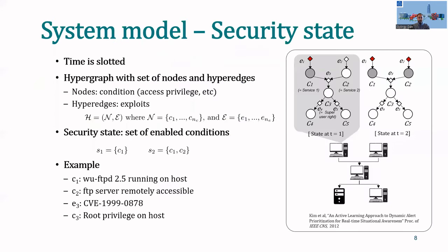To give you an idea of our model of the security state, we consider that time is slotted and we model the system's health in terms of security as a hypergraph that consists of a set of nodes and hyperedges. The nodes are conditions and the hyperedges are exploits. In the image on the right, you can see a simple example where we have initial exploits E1 and E2 and showing conditions C1 and C2.